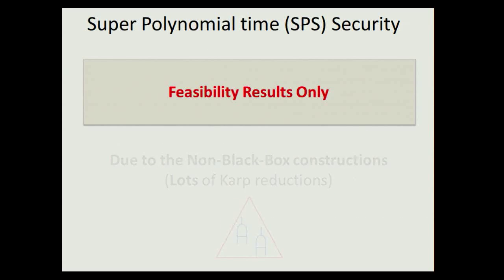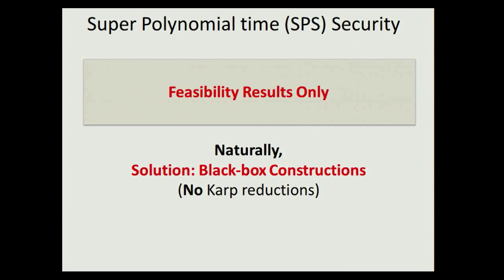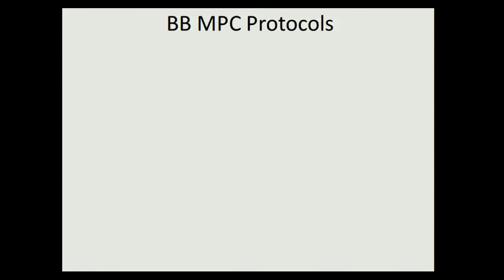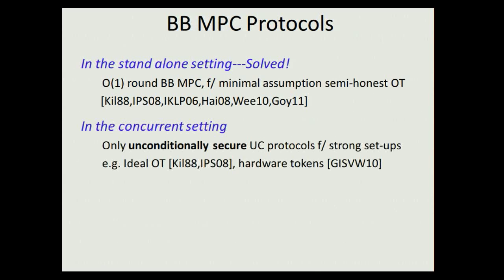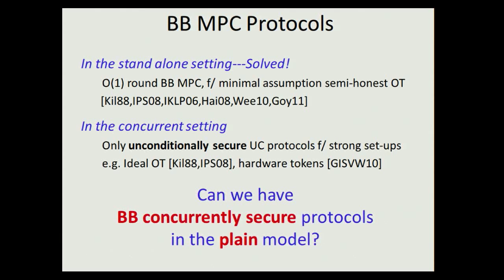Naturally, we would like to seek black box solutions, where we will automatically have no code reduction and potentially get more efficient protocols. So where do we stand with respect to black box multi-party computation protocols? In the standalone setting, the problem is basically solved — after a long line of research, we have constant-round black box multi-party computation protocols from the minimal assumption of semi-honest OT. However, when we move to the concurrent setting, the situation becomes much less complete. The only positive results we know are unconditionally secure UC protocols using very strong trusted setup, like ideal OT or hardware tokens. In fact, we know no black box construction in any weaker setup model or in the plain model. So naturally, the question is: can we get a black box concurrently secure protocol in the plain model?